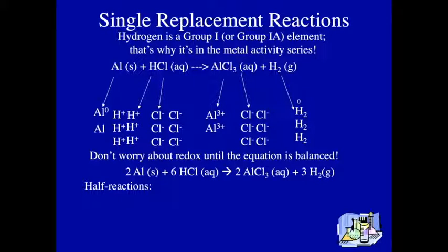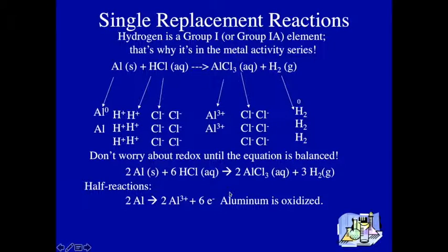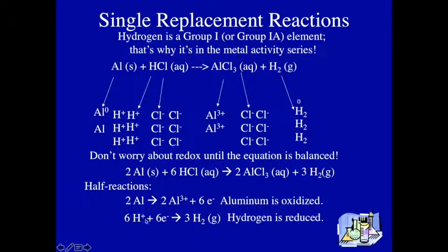Now that it's balanced, I can look at the half reactions and see that aluminum going from a neutral zero charge to a plus three has to be oxidized — this is the more active metal in my activity series. The two aluminums started with zero charge, so an overall plus six charge is accomplished by removing six electrons from the two aluminum atoms. Those six electrons find the six hydrogen ions in the hydrogen chloride, join with six electrons, and make three molecules of hydrogen. When I drop aluminum metal into hydrochloric acid, I make an aqueous solution of aluminum chloride and hydrogen gas bubbling out of the solution.